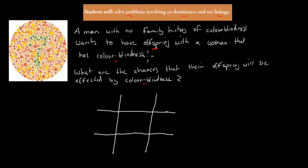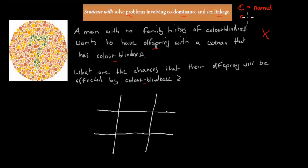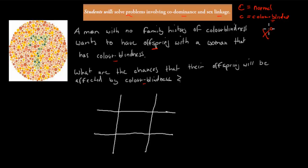The first thing you should realise is that the colour blindness is carried on the X chromosome because the woman is affected. So the X chromosome is affected. If we say capital C stands for normal vision and a small c stands for colour blindness, we write that on top of the actual X chromosome. In most cases it's the X chromosome because it carries most of our genetic information compared to the Y chromosome. Colour blindness has a recessive allele, so it would have a small c, whereas normal vision would have a capital C.